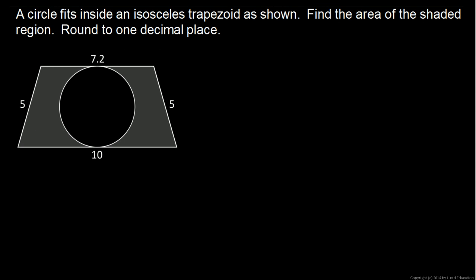In this problem we're given an isosceles trapezoid and a circle that just fits inside it, and the circle touches at the top and the bottom, but not left to right. And we're told to find the area of the shaded region. That's this area over here and over here together.